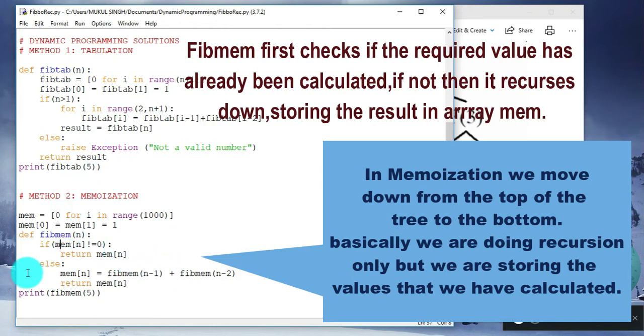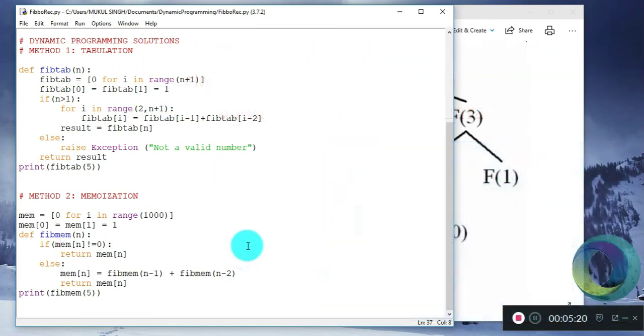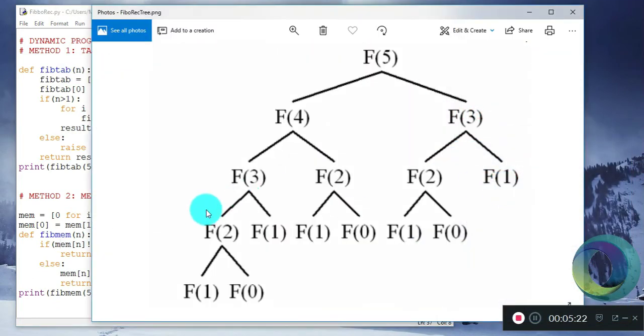If it is not found, then this function calls fibmem with n-1 and fibmem with n-2 and adds them. This might look difficult, but this is simply what we are doing in tabulation done in the reverse.